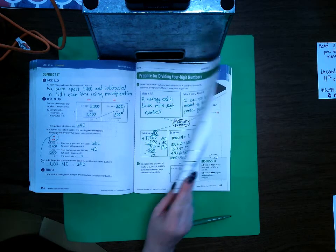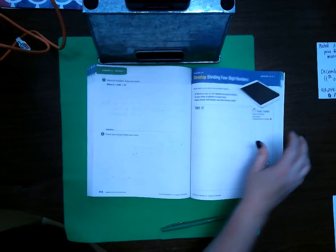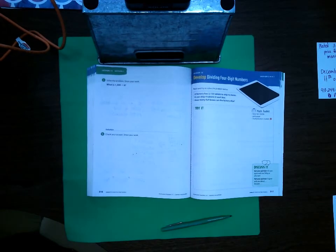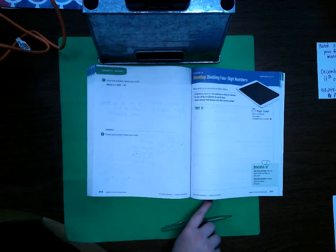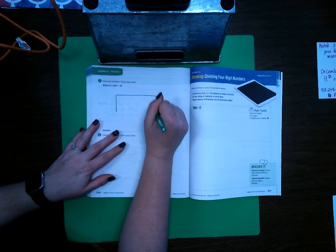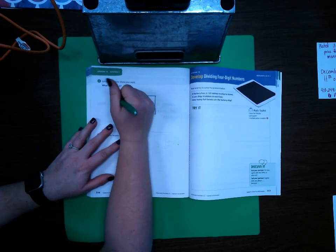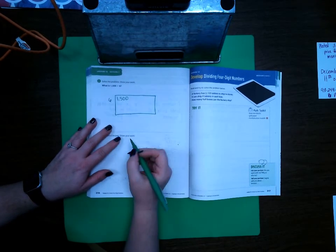Okay, go ahead and turn the page to 316. This is our last problem for today. Our last problem here, 1,500 divided by 6. Let's go ahead and make our area model.